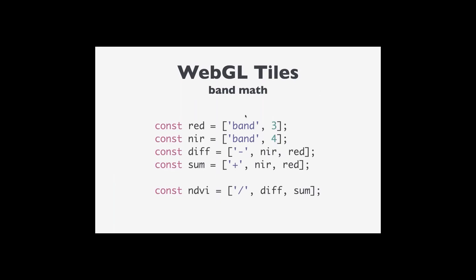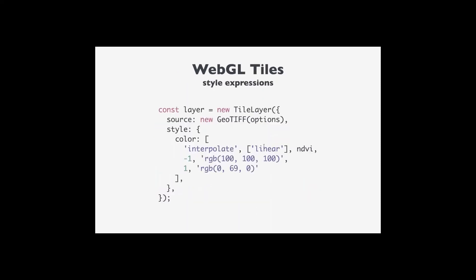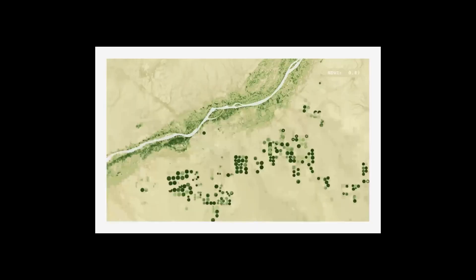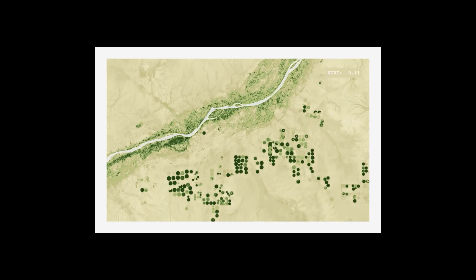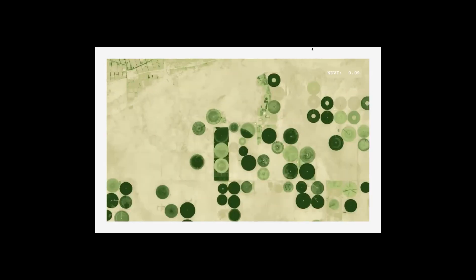You can display pixels directly from bands, or you can perform transformations. For example, computing NDVI: take the difference between near infrared and red, divided by the sum of those two bands. You can then do a linear interpolation of NDVI, displaying values of negative one as gray and positive one as dark green. Here's an example of those dynamically generated NDVI values shown in the top.